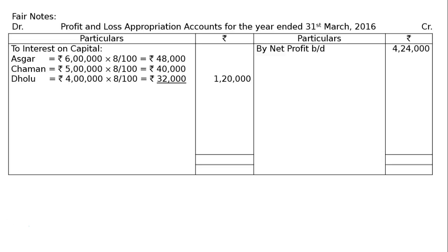The capital for Oskar is Rs. 6,00,000, for Chaman Rs. 5,00,000, and for Dholu Rs. 4,00,000 — total Rs. 14,00,000. Oskar's interest on capital = Rs. 6,00,000 × 8% = Rs. 48,000. For Chaman, Rs. 5,00,000 × 8% = Rs. 40,000. For Dholu, Rs. 4,00,000 × 8% = Rs. 32,000. Hence, total interest on capital is Rs. 1,20,000.